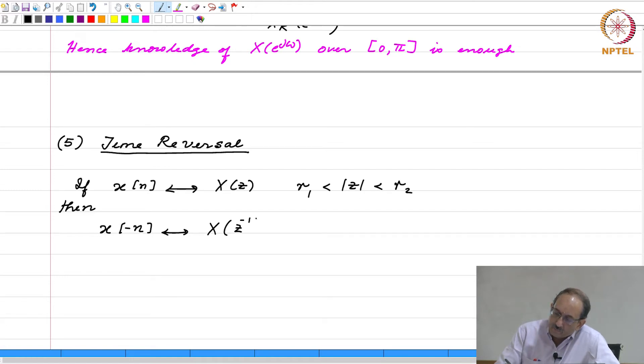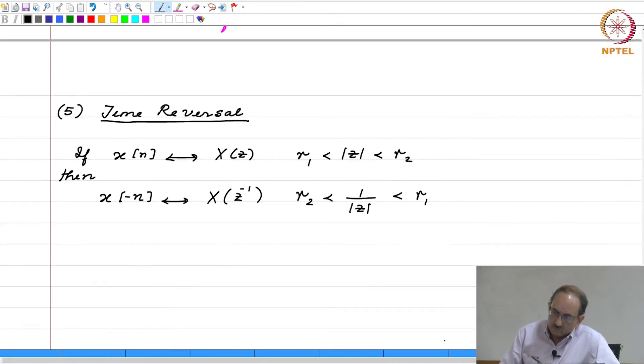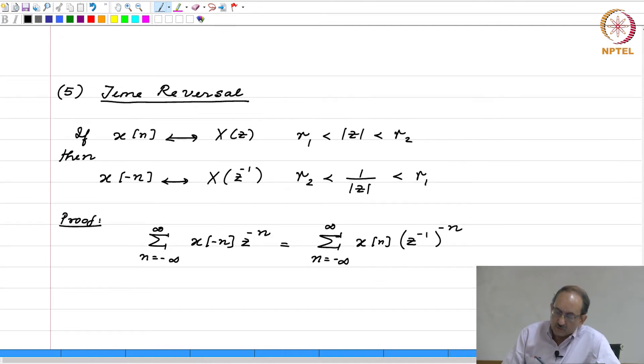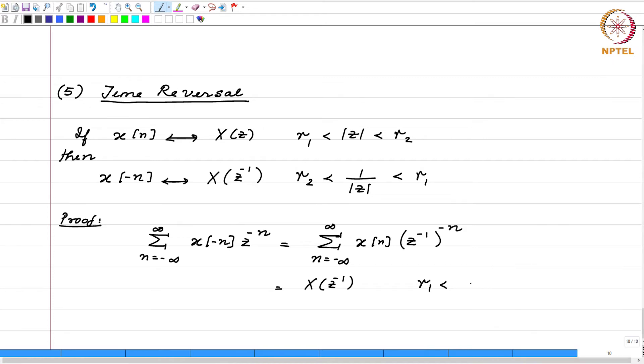This is z inverse. The proof again is pretty straightforward here. All you need to do is replace n by minus n and relabel. This becomes x of n z to the n. But really, this z to the n can be written as z inverse power minus n, because you want it of the form the complex variable to the minus n. So, this is really x of z inverse and you want r 1 less than this.